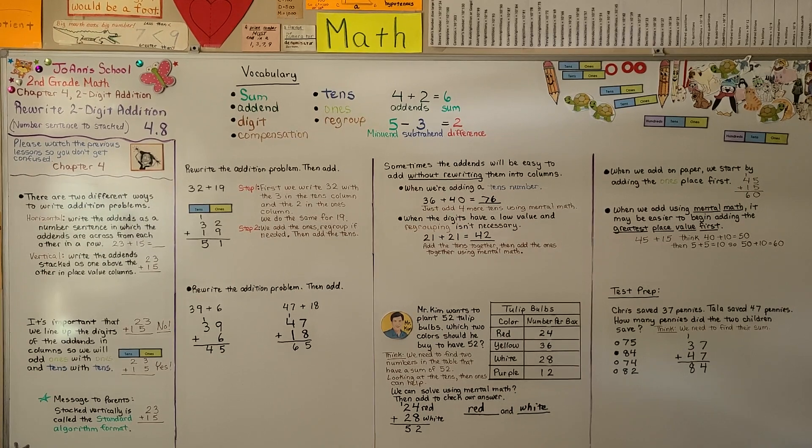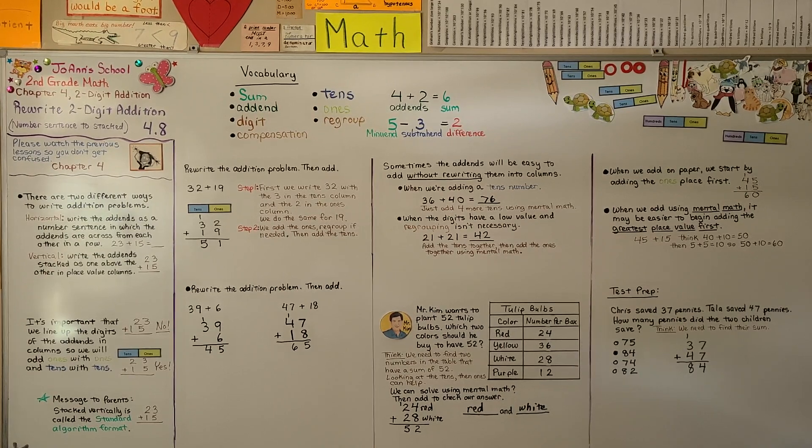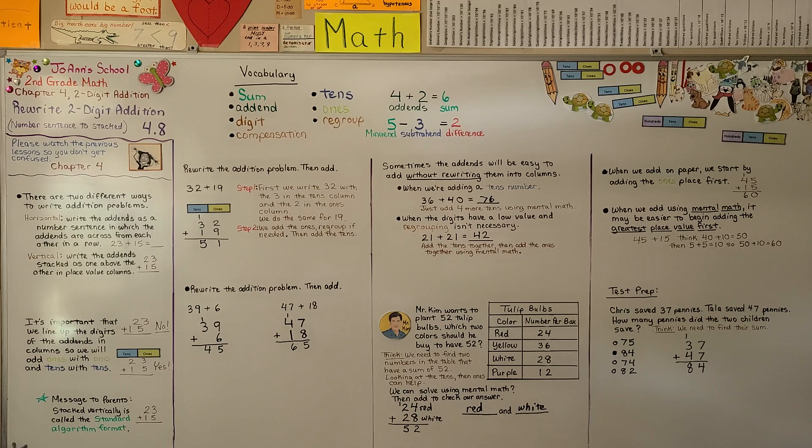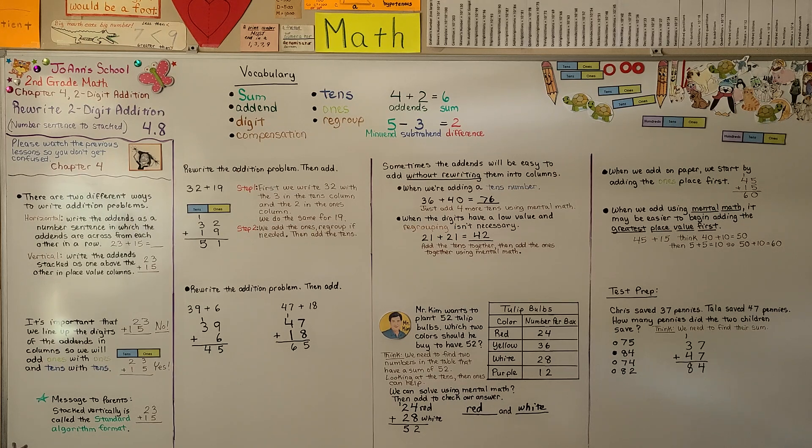Remember, it's very important to line up your columns perfectly. Tens above tens and ones above ones. You can turn a piece of lined paper sideways to keep your columns in order.